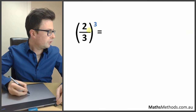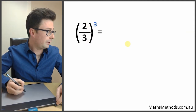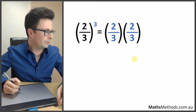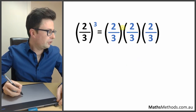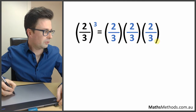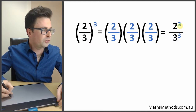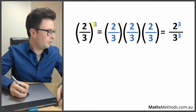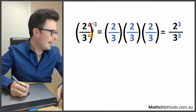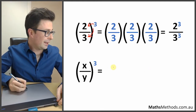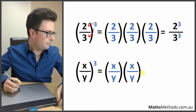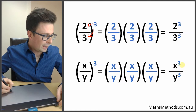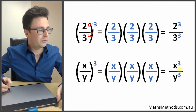If you've got 2 over 3 to the power of 3, that means you've got 3 of them: 2 times 2 times 2 on top, and 3 times 3 times 3 on the bottom — so that's 2 to the power of 3 over 3 to the power of 3. The trick is that this power distributes to both the numerator and denominator. The same works with letters: x to the power of 3 divided by y to the power of 3.